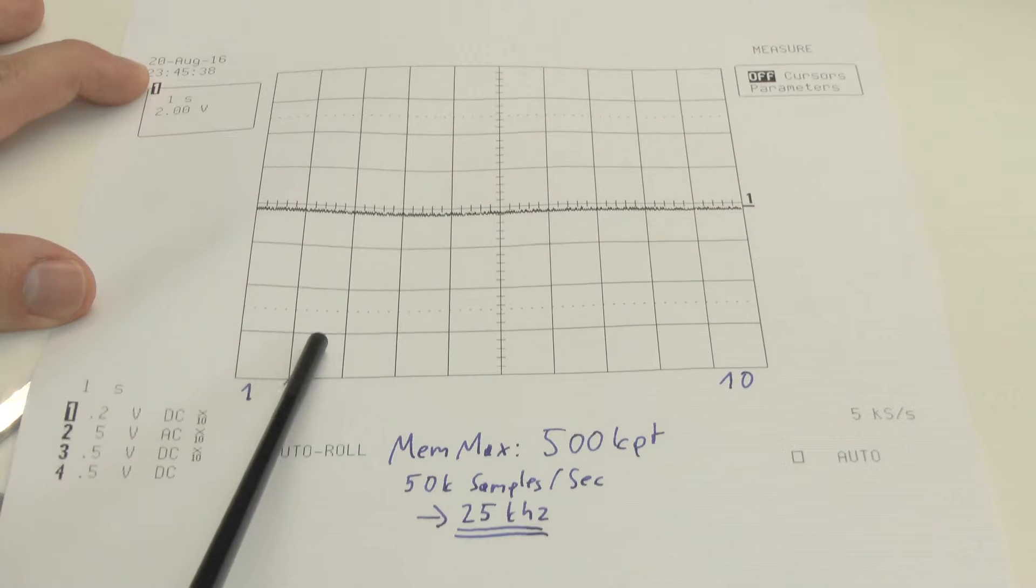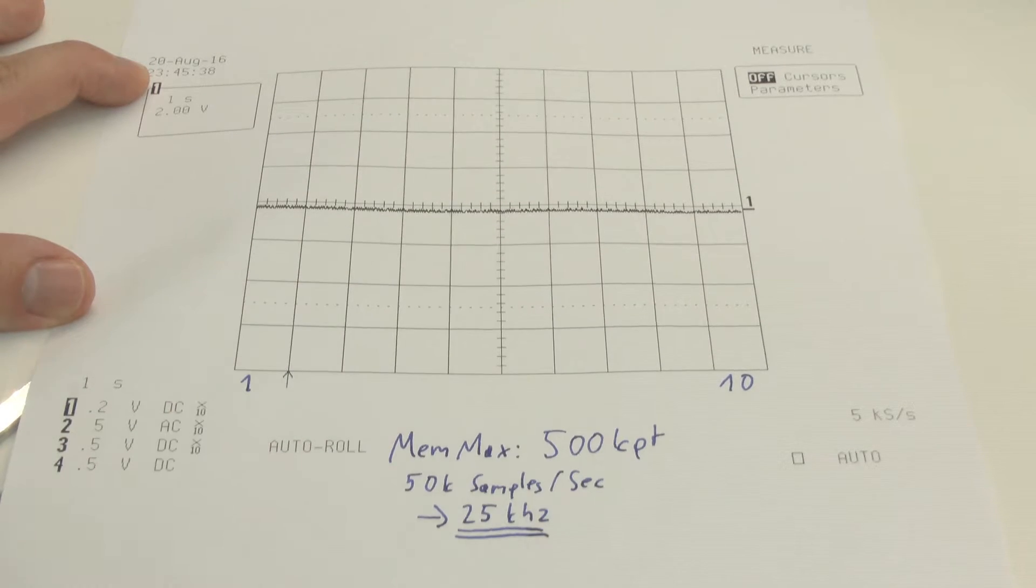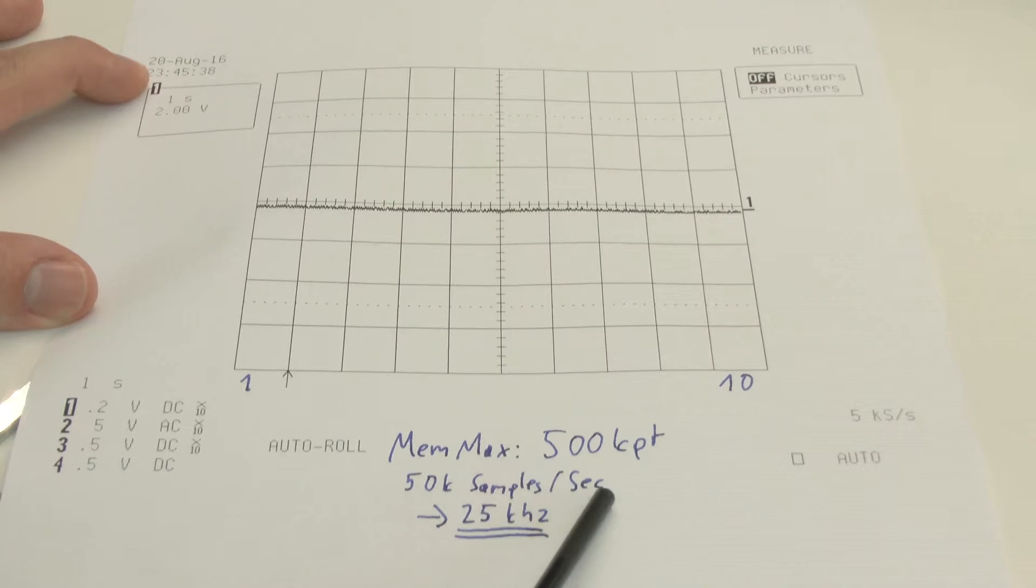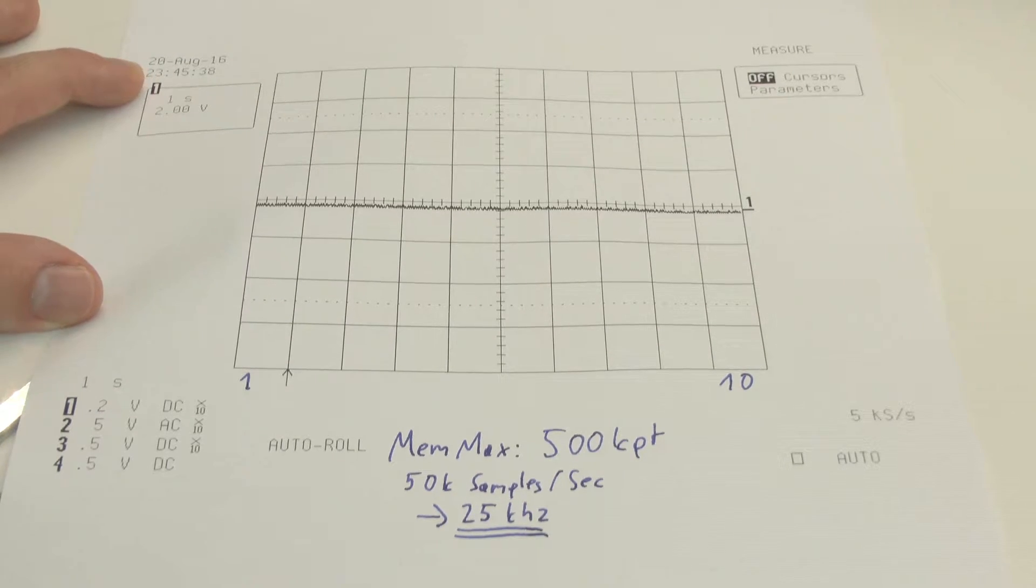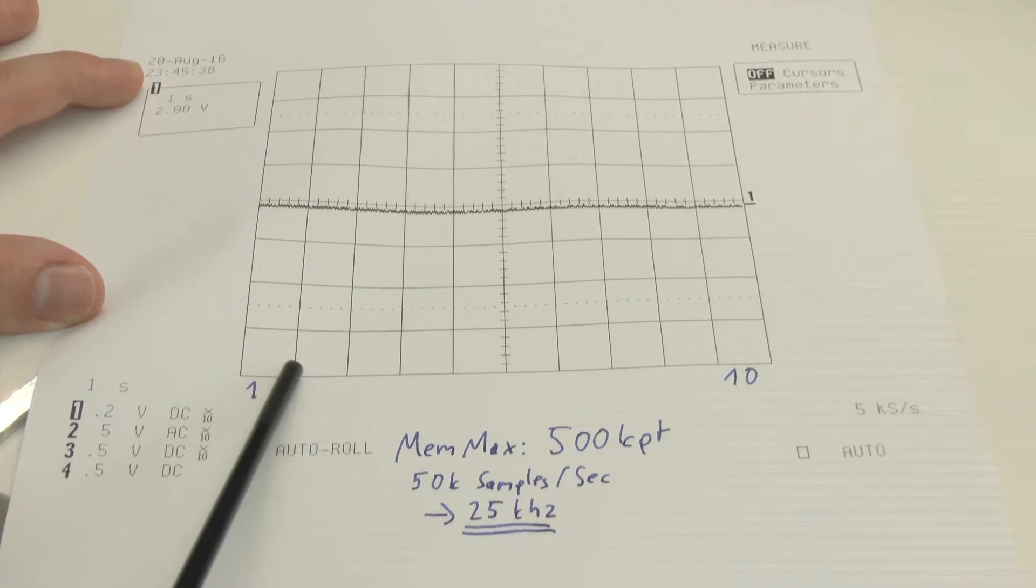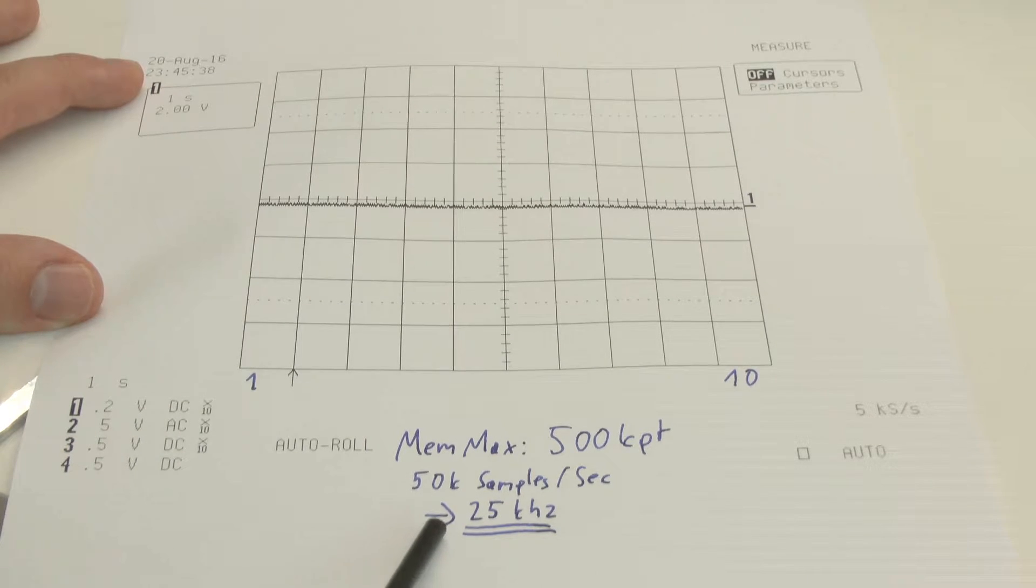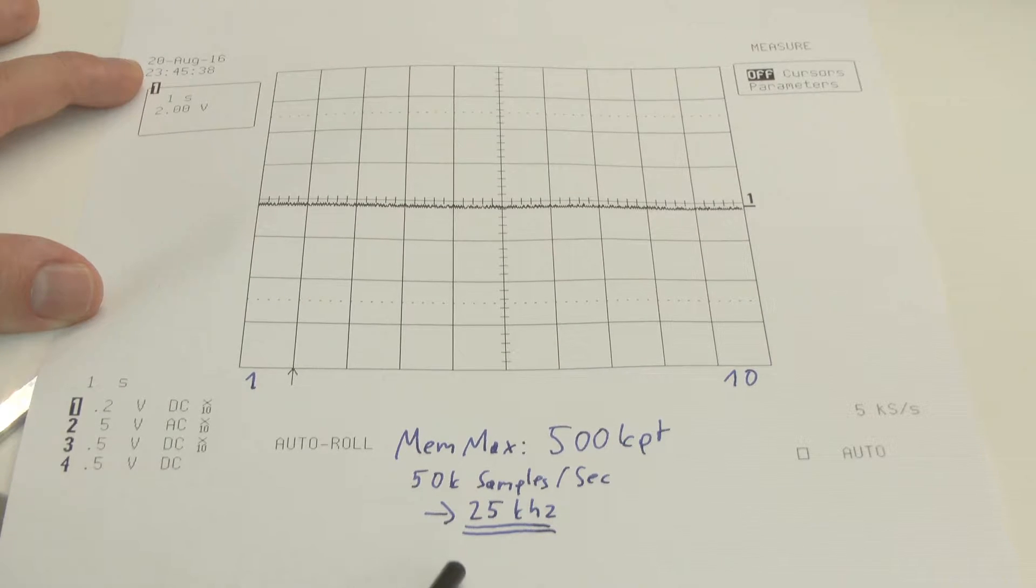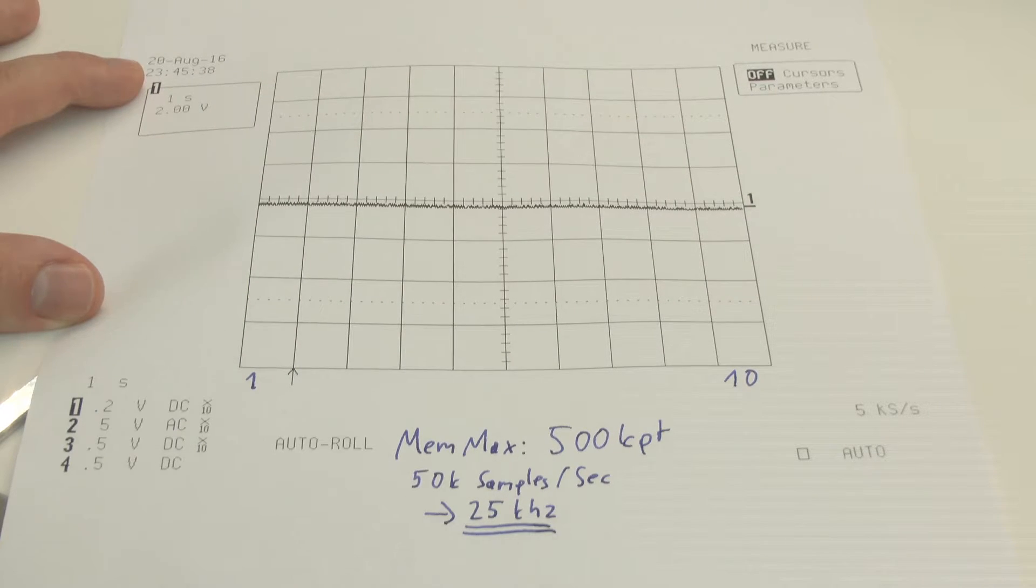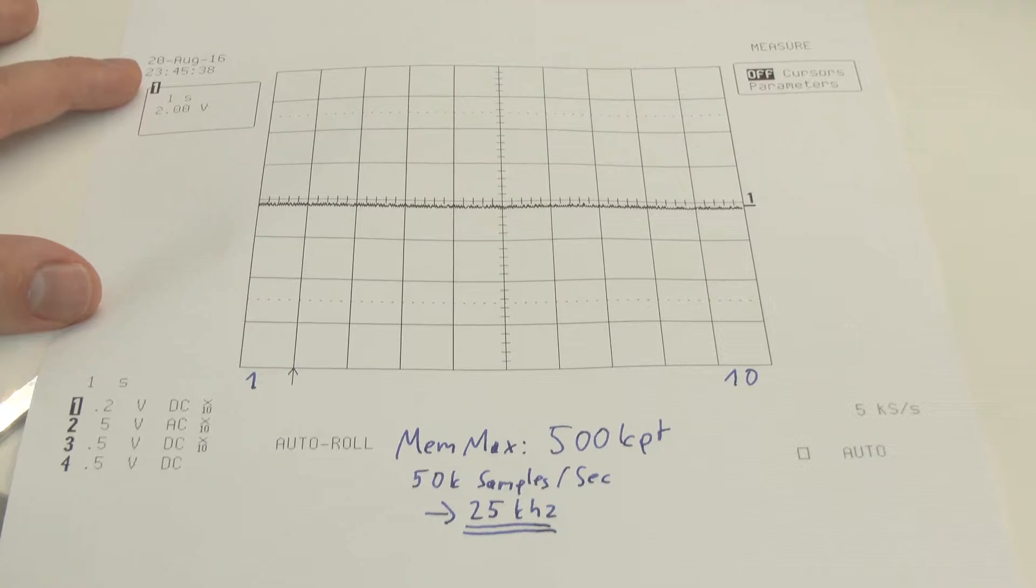You see here, we've got a total of 10 boxes, and we've got a theoretical maximum memory of 500 kilopoints in dual channel mode. So this tells us that for each one of these boxes, we've got but 50k points, which according to Nyquist's theorem, limits us to just 25 kilohertz sampling rate.